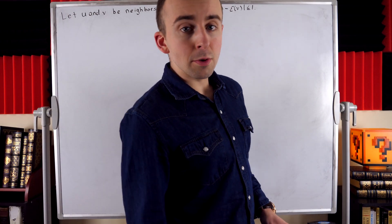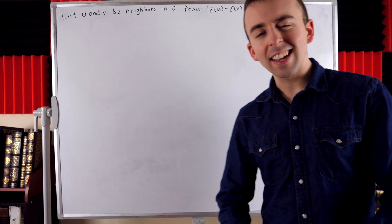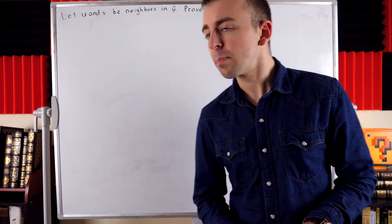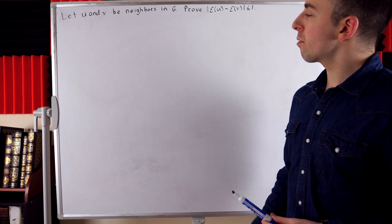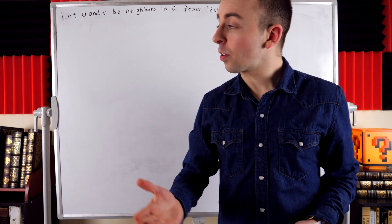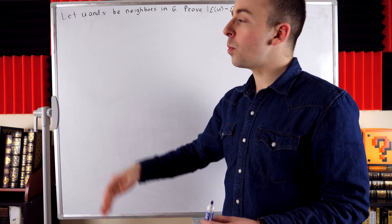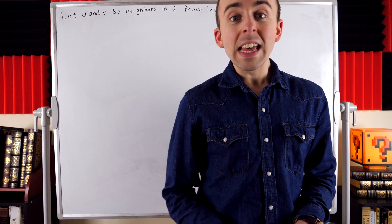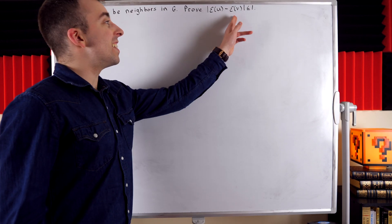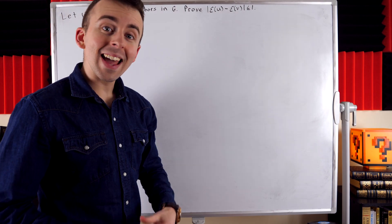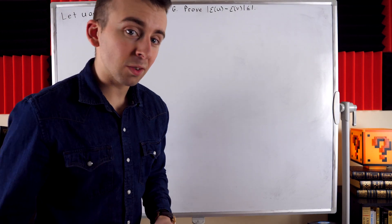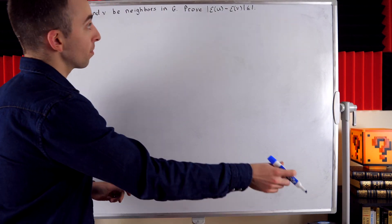I've got a fun little proof about eccentricities for you today. We're going to prove that for two adjacent vertices u and v, their eccentricities can differ by at most one. That's what we're going to prove.